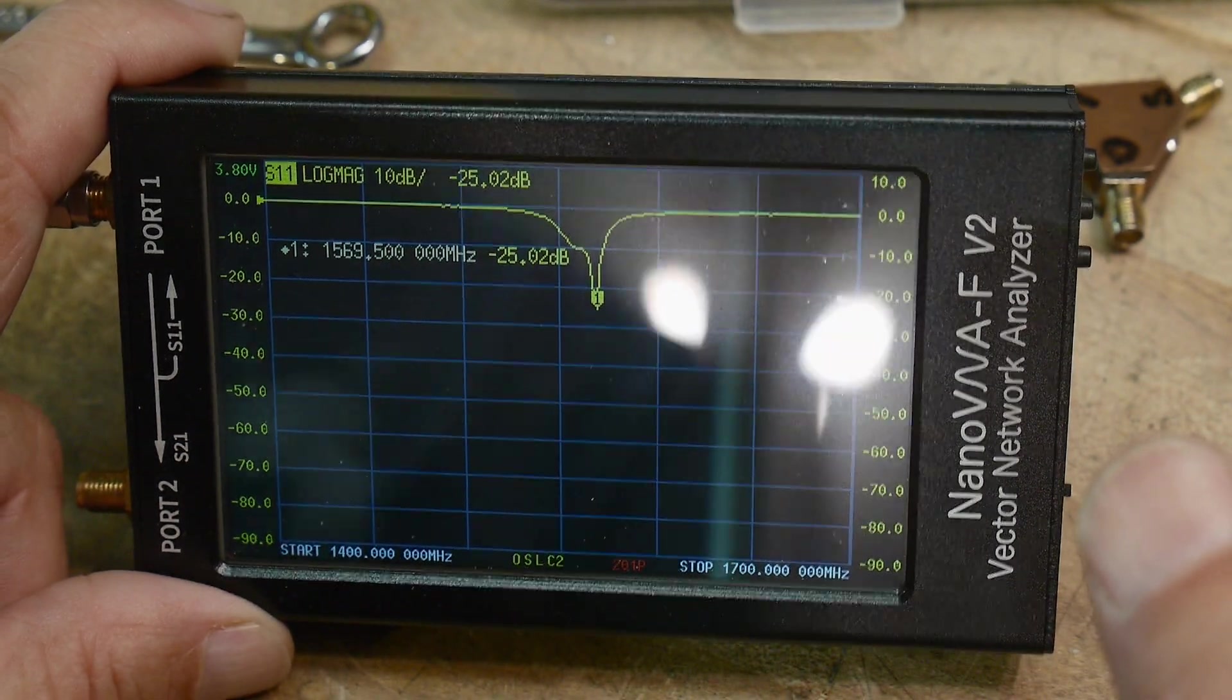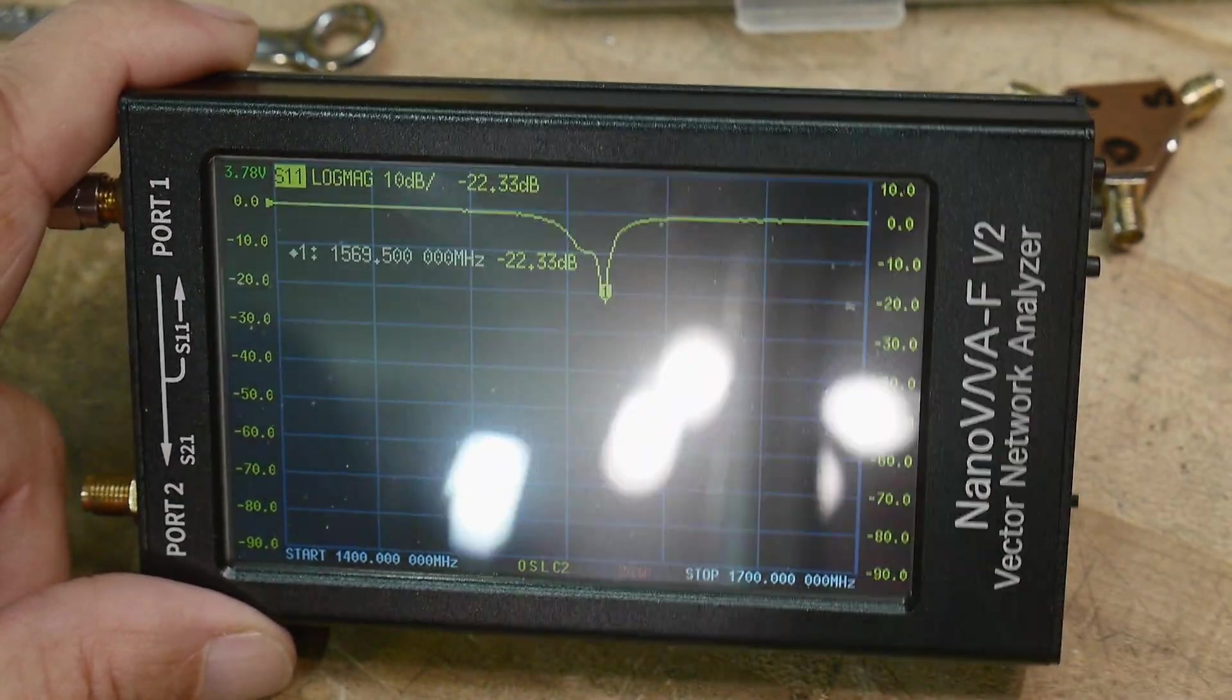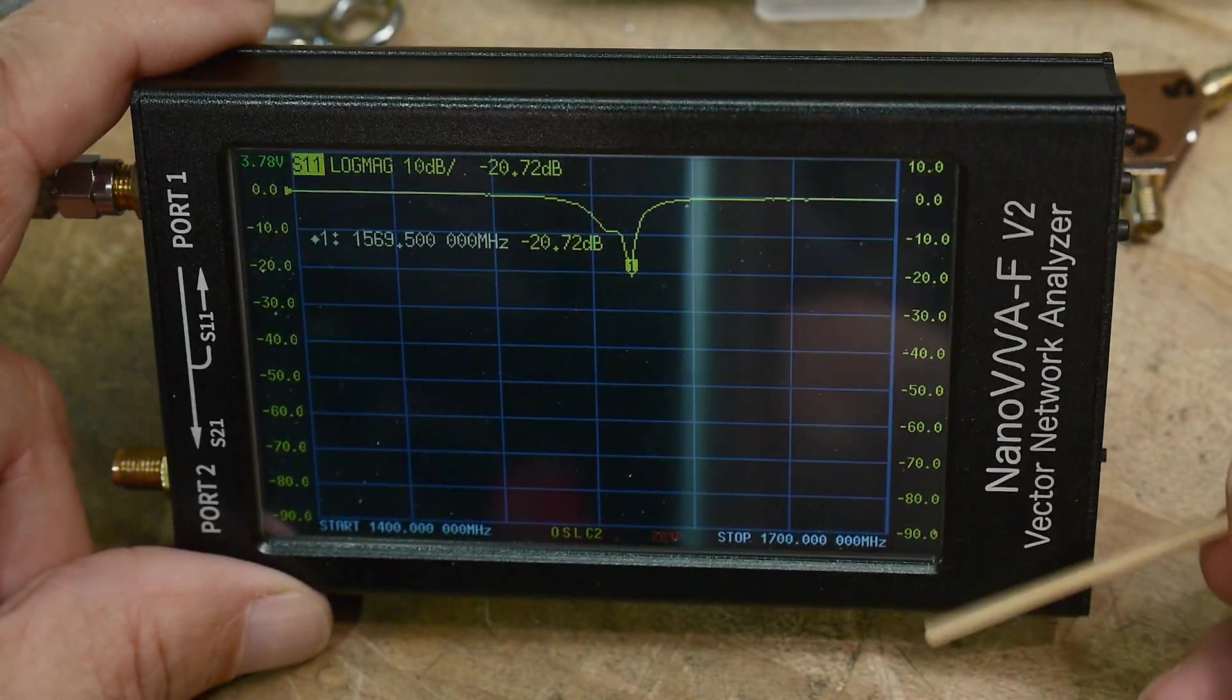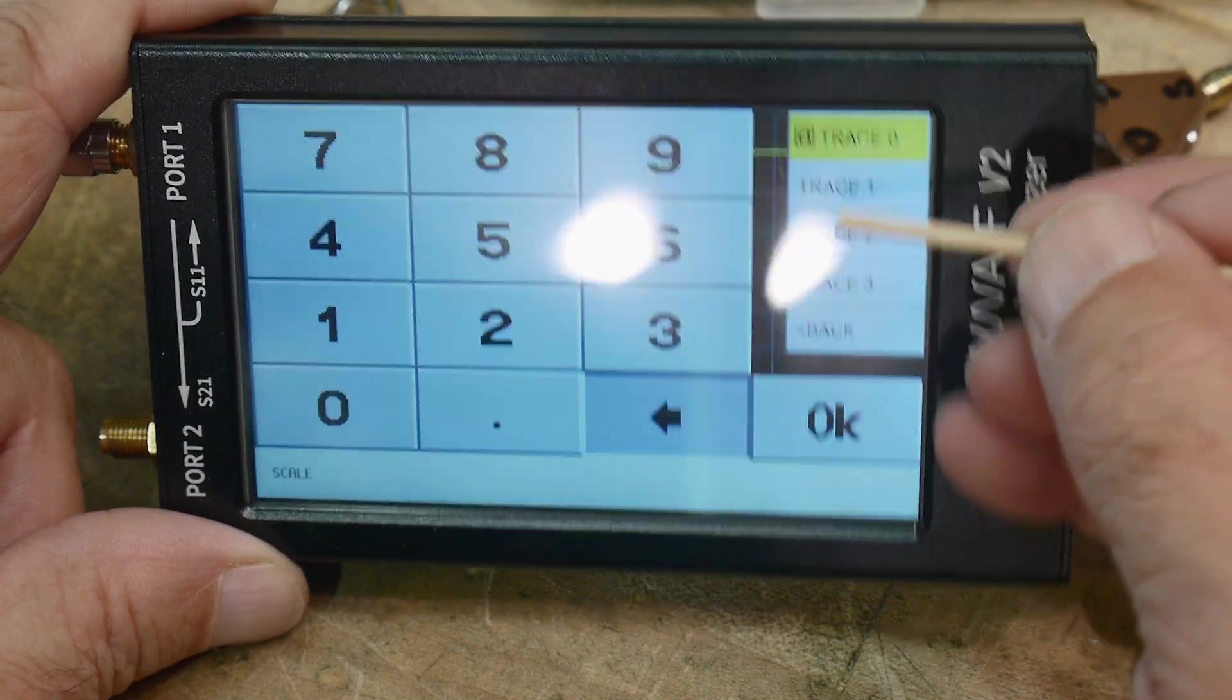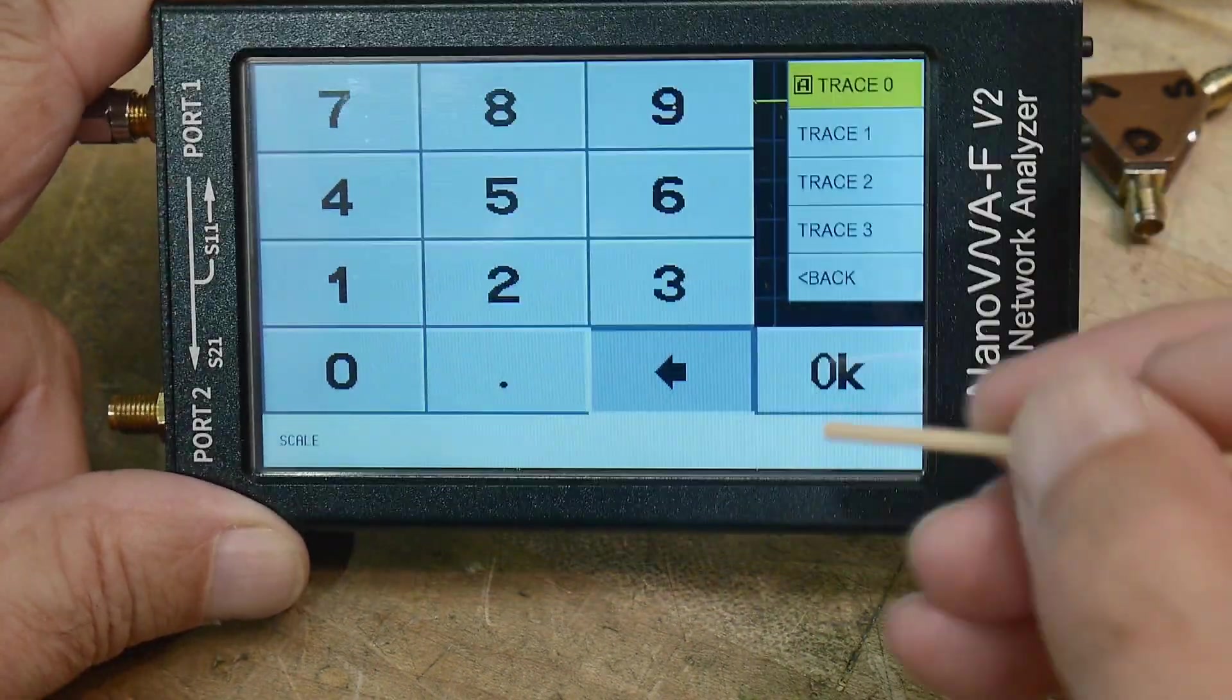So we're getting a dip right there at 1.57 and it's about minus 25 dB, so a very nice match. If we want to take a look at this, let's see here, trace...